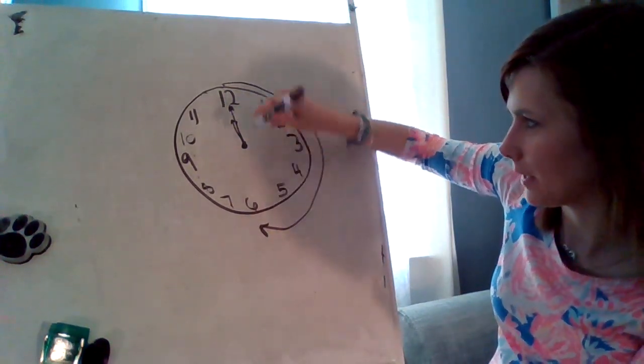Ready for our next one? What time is it? Look where the minute hand is — it's up on the 12. So we know the hour hand is on the 2. It is 2 o'clock. Did you have that written down? 2 o'clock.